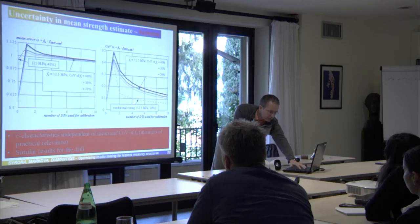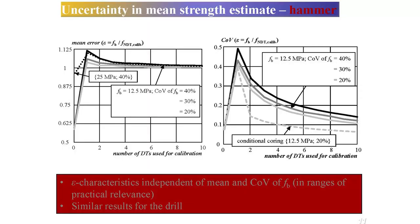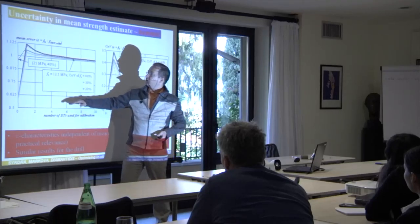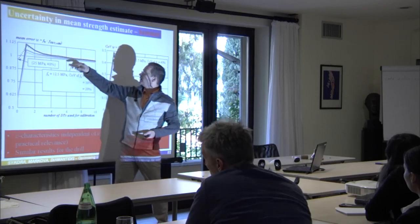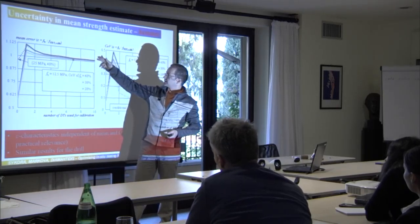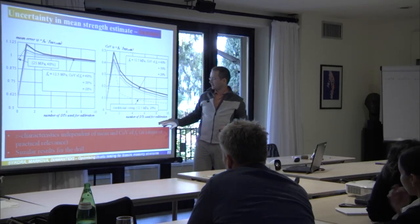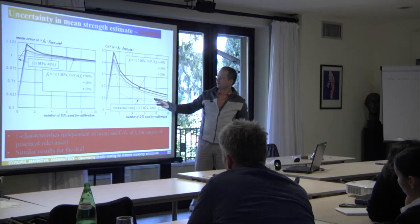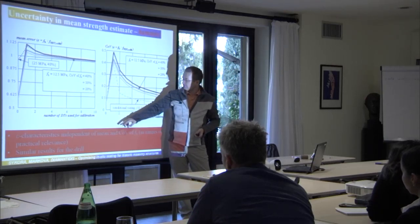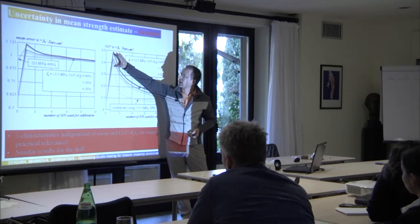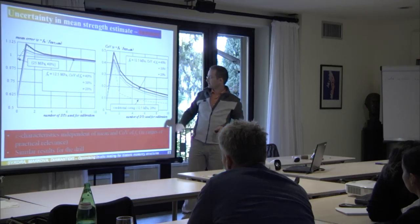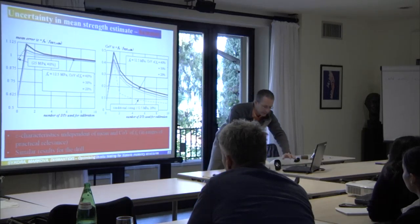We have statistical information to develop our probabilistic models, so we can play with that. Using a varying number of destructive tests for calibration of non-destructive results, we can quantify the mean and our error. For 10 destructive tests, we are approaching the correct value. We can also interpret this in terms of coefficient of variation — for one destructive test we have high scatter in our estimate, and this reduces as more tests are added.